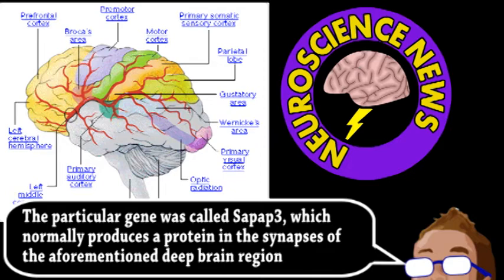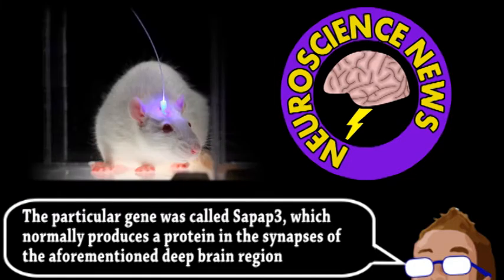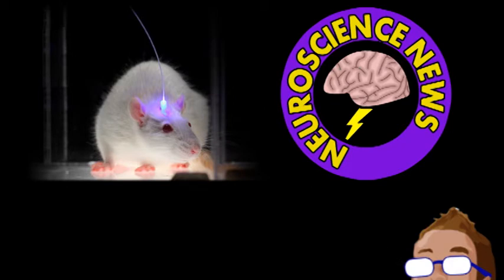Next, they used our favorite method, optogenetics, to make those neurons react to light, allowing the researchers to inhibit their function at will and study the results. This highly targeted stimulation greatly reduced the OCD-like behavior, and it resumed when the light was removed.